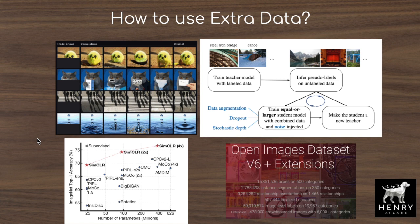Starting with supervised transfer learning: we take a model and train it on a large labeled dataset like ImageNet, and then repurpose those features as the backbone for an object classification head to be trained on top of those features.